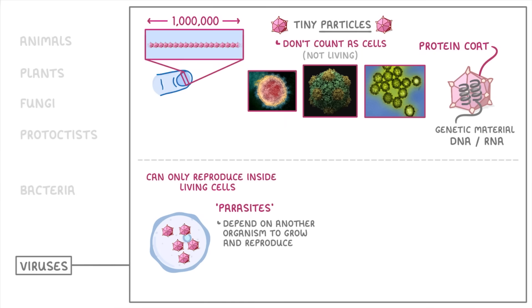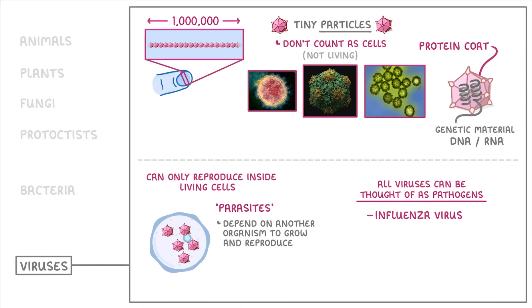One last thing to add is that unlike the other groups we've seen, all viruses can be thought of as pathogens, because they always cause harm to living organisms when they use their cells to reproduce. A few examples of viruses include the influenza virus, which causes influenza; tobacco mosaic virus, which affects tobacco and tomato plants; HIV, which can cause AIDS; and of course, COVID-19.